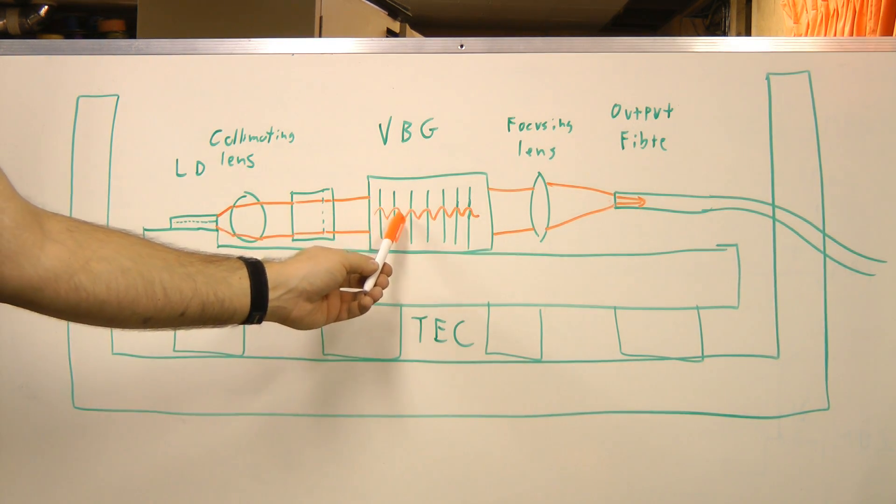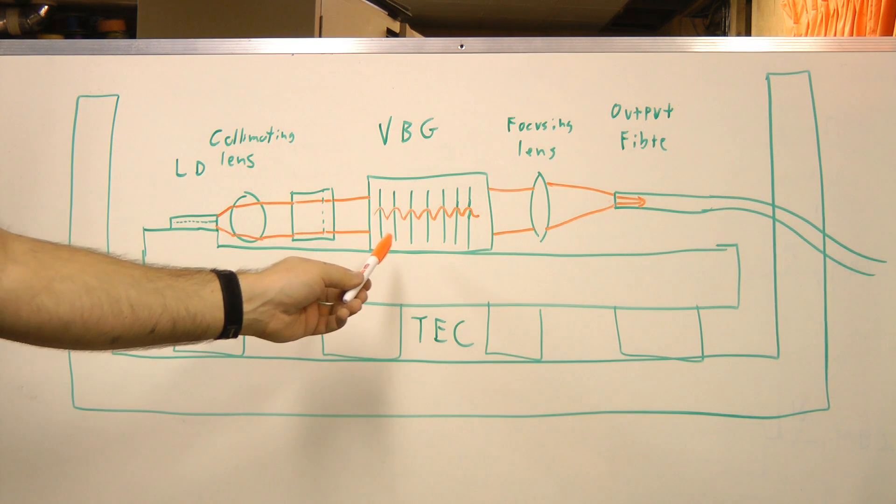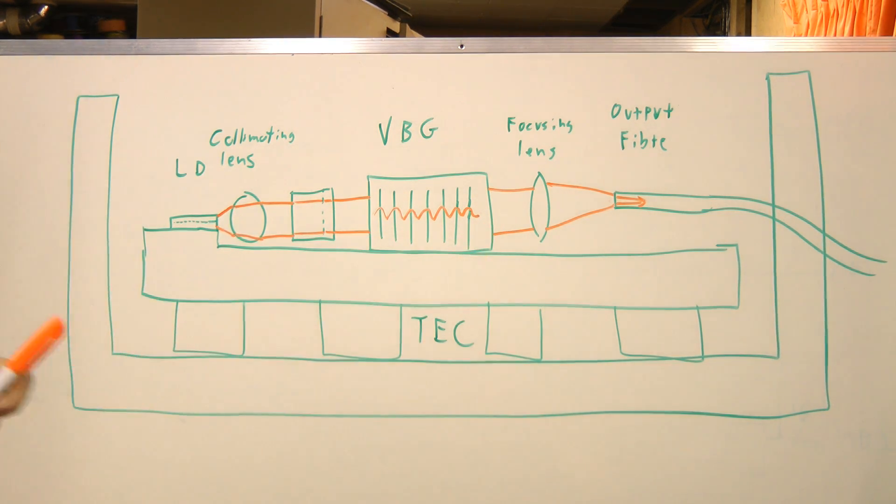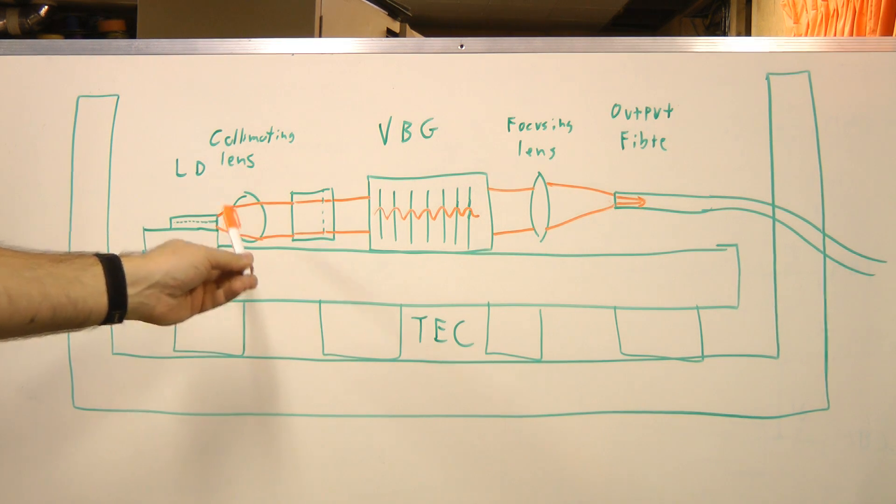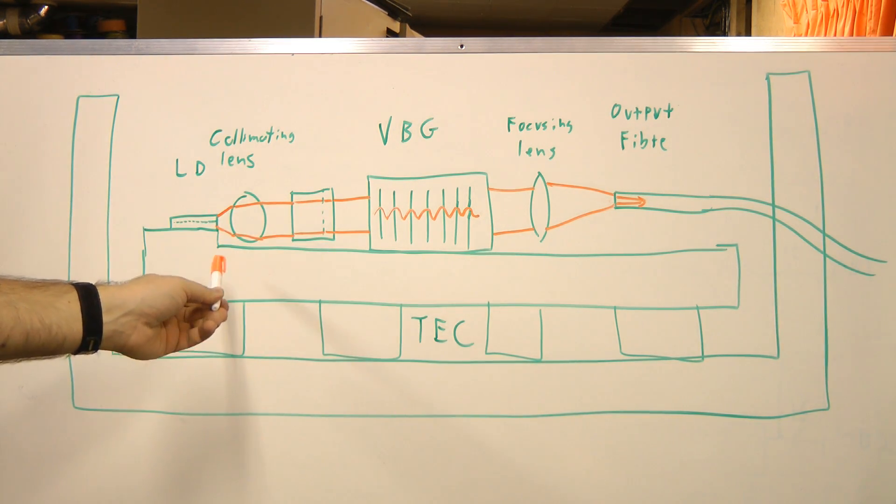Whereas if these peaks are not all lined up, they sort of cancel out and most of the light is transmitted. You might wonder how reflecting the light back towards the laser is going to get the wavelength we desire out.